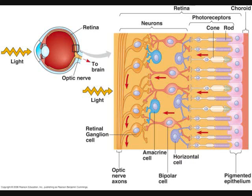Horizontal cells are neurons that run perpendicular to bipolar cells and are located where the photoreceptors synapse with the bipolar cells. Like the amacrine cells, horizontal cells can facilitate or inhibit signaling between the photoreceptors and the retinal ganglion cells.